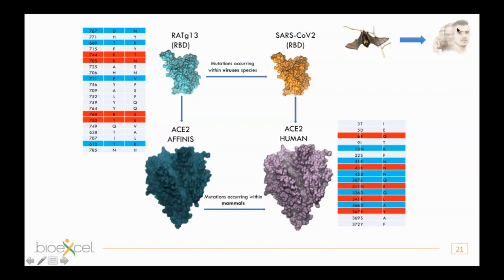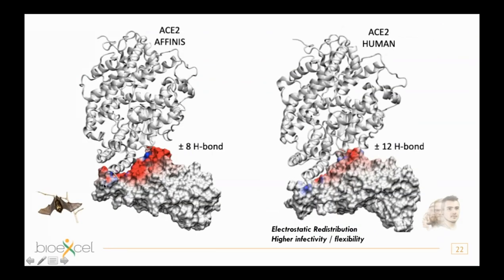For the bat-to-human transition (RaTG13 to SARS-CoV-2), there are 21 different mutations. Many of these, highlighted in blue and red, are charge-changing mutations introducing or removing charges — lysines, arginines, glutamic acids, or aspartic acids. A similar charge-changing trend is seen in the ACE2 mutations across species. Painting the interface electrostatics reveals a high redistribution of electrostatic potential at the RBD–ACE2 interface between bat and human viruses.